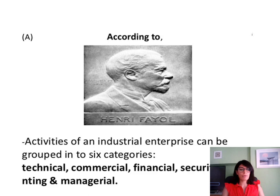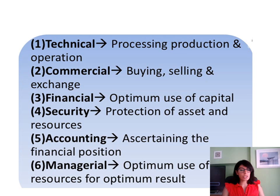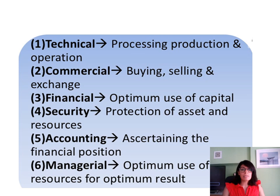According to Fayol, the activities of an industrial enterprise can be grouped into six categories. First, technical — the production and operational side of the business. Second, commercial — buying, selling and exchanging. Third, financial — how you best use the organisation's money to achieve goals. Fourth, security — protecting assets, resources, people, buildings and technical infrastructure. Fifth, accounting — determining financial position, balance sheets and cash flow. Sixth, managerial — using resources to the best of your ability to achieve the results you have set yourself.